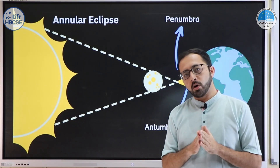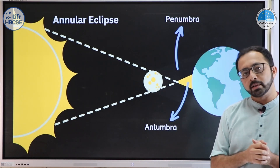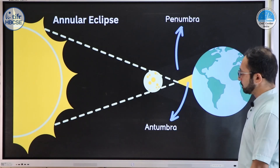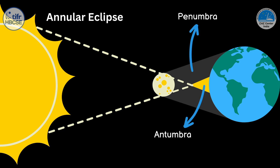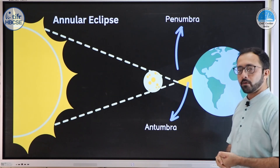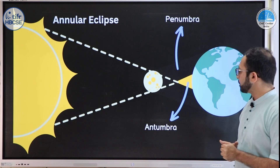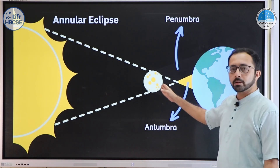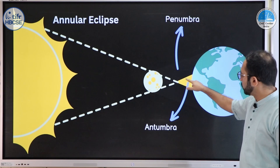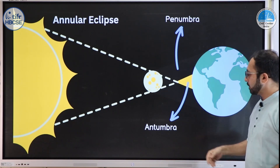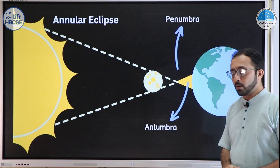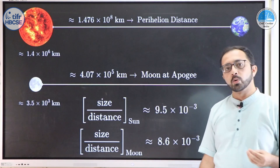Then how can an annular solar eclipse occur if the sun is completely covered by the moon? In the ray diagram — with sun, moon, and earth — because the orbits of earth around the sun and moon around earth are elliptical, sometimes the moon is slightly farther away and the umbra doesn't reach the earth's surface. The resulting shadow region that falls on earth is called the antumbra, and if you are standing in the antumbra, you will see the annular solar eclipse.